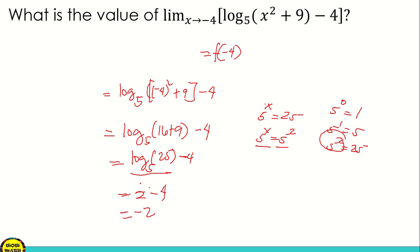So the answer for logarithm of x squared plus 9 minus 4 with base 5 as x approaches negative 4 is negative 2.